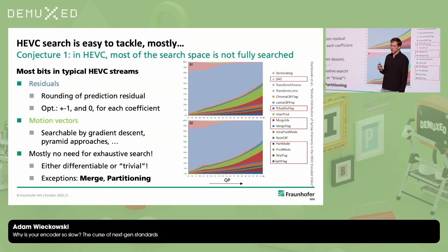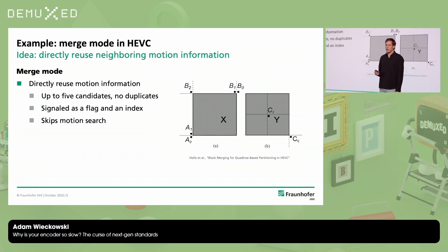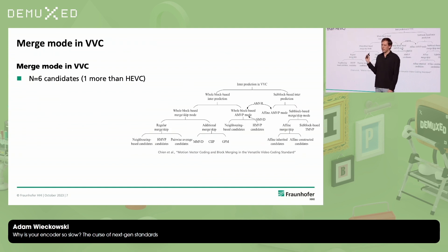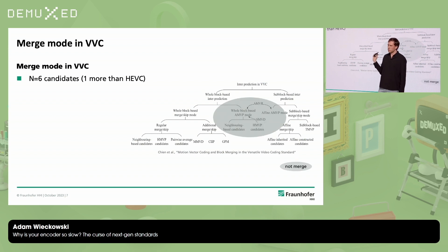What is merge? The idea of merge is that when you derive the motion for a specific block, you just copy it from one of the neighboring blocks. You signal a flag that you're doing merge, then signal which candidate you want from a list as an index. The issue is that the index is not differentiable, so you basically have to do an exhaustive search — there's no easy way to derive the optimal candidate. Going from HEVC to VVC, on the right you can see the scope of all the inter predictive tools available in VVC. Gray shows what is not merge, orange shows what was already in HEVC — all the rest is VVC merge. It has been really extended a lot.